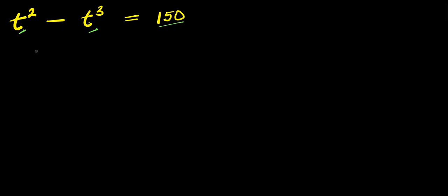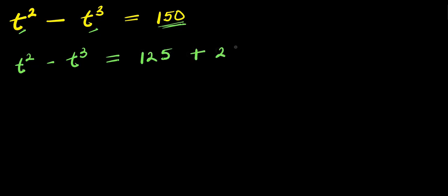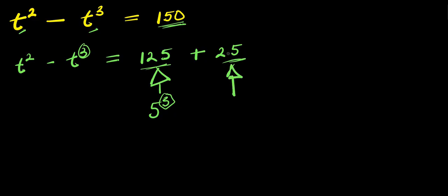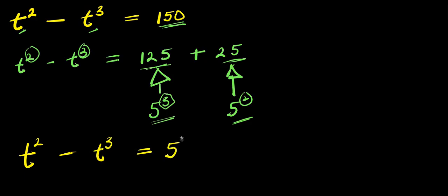We are solving for all values of t that satisfy this equation. So we have t to the power of 2 minus t to the power of 3 equals 150. We can express 150 as a summation of 125 plus 25. We use 125 because it can be expressed as 5 to the power of 3, and that exponent corresponds to the t³ term. We use 25 because it can be expressed as 5 to the power of 2, and that exponent corresponds to the t² term. So we use 5³ and 5² respectively.